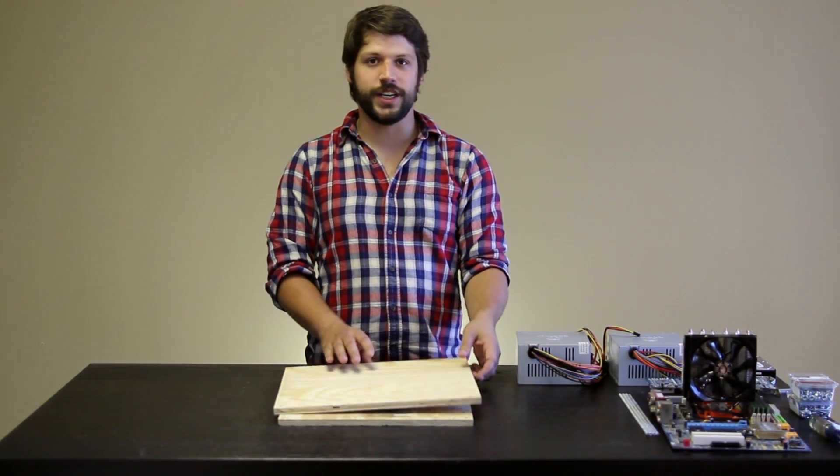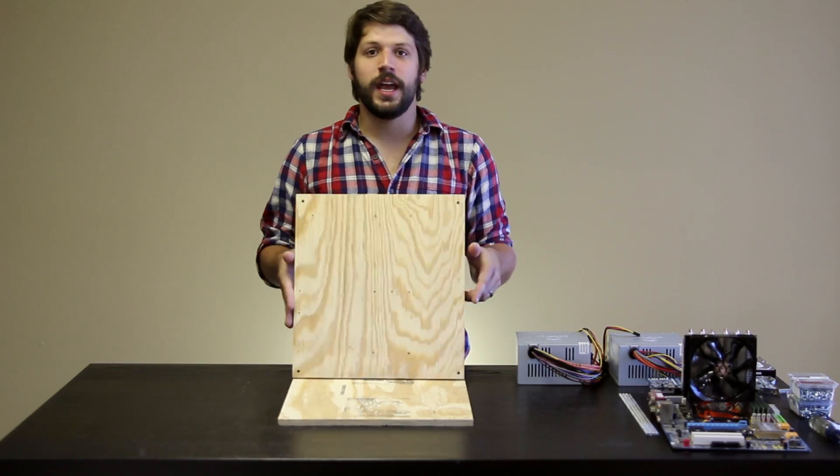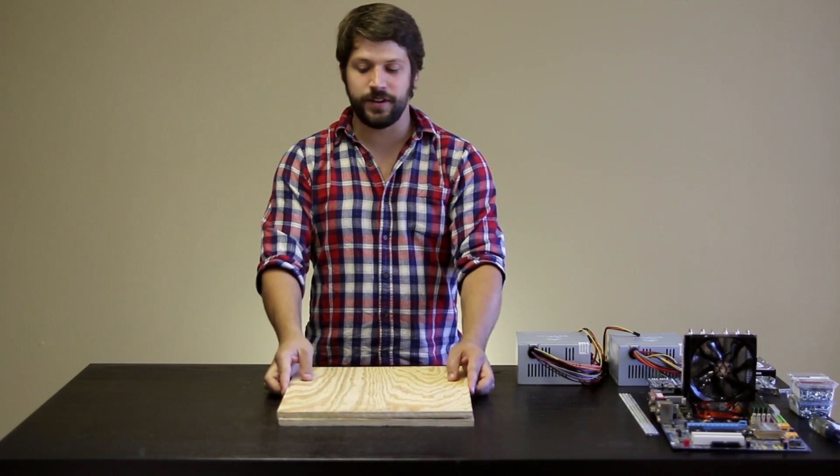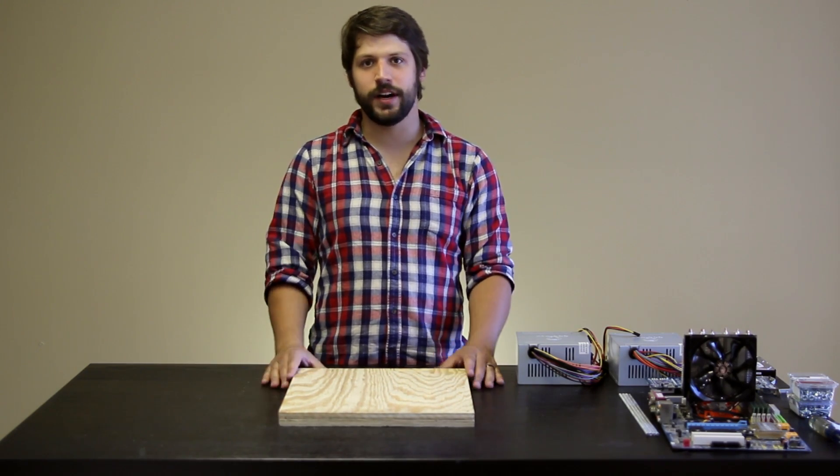You also need to drill four holes for each of your posts, one at each corner. Best way to do this is to place both boards on top of each other and to drill through both boards at the same time. This ensures that they are lined up properly.